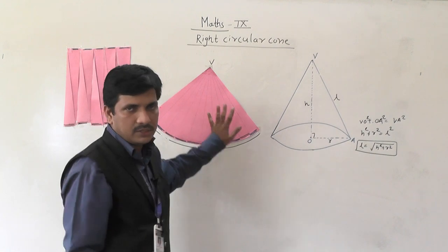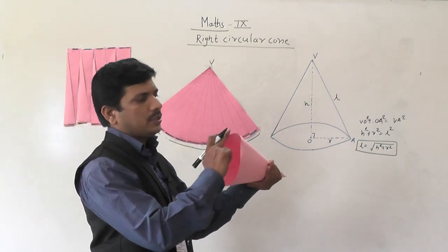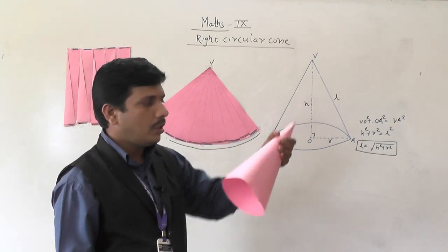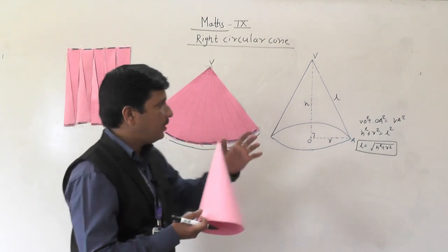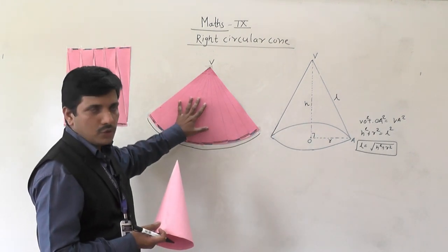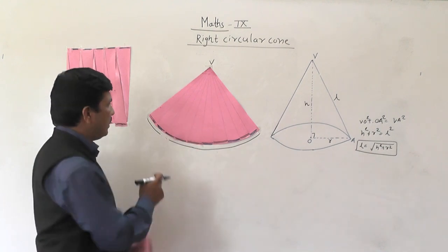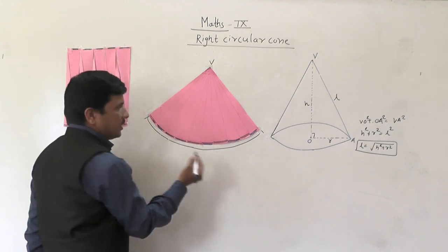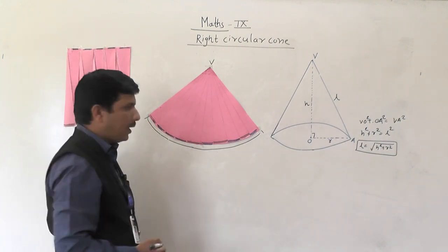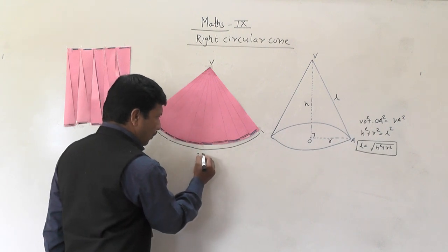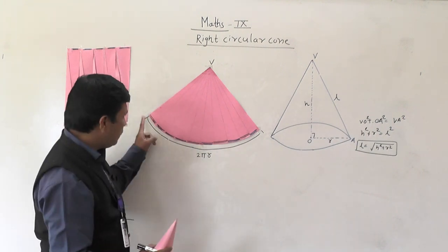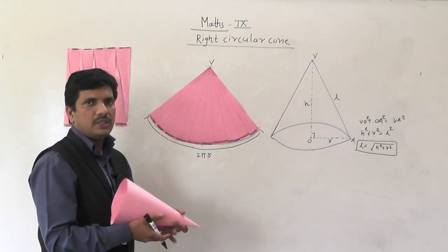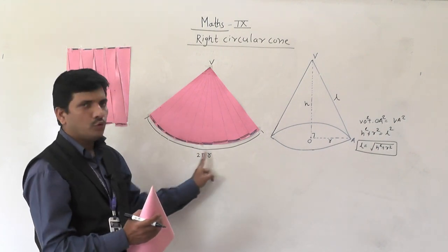After opening this, you will get a figure like this. Just now I told you this is the circumference of the circle, and circumference we denote by 2πr. Once when you open this, you will get a figure like this. So circumference means this area — from this point to this point, that is the circumference of the circle, which we denote by 2πr.